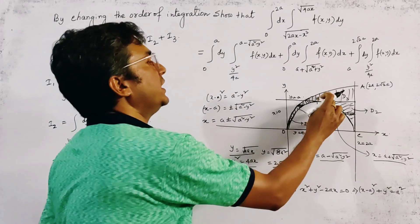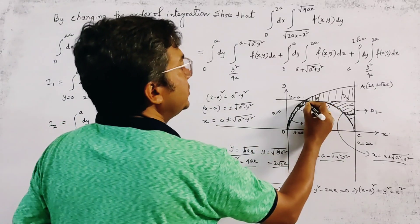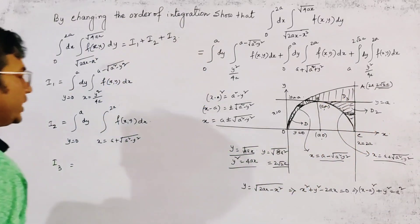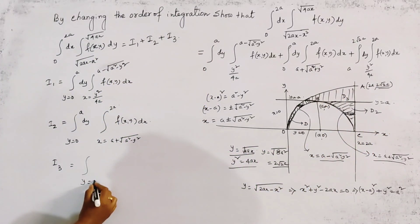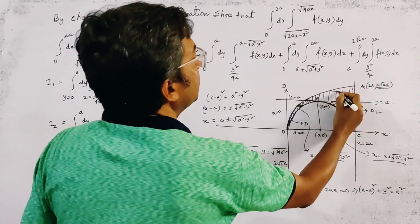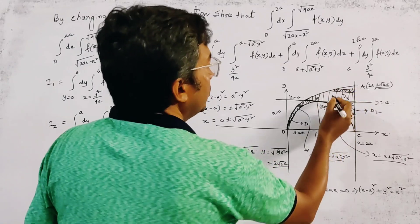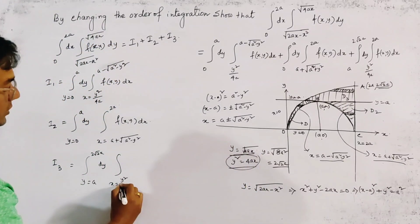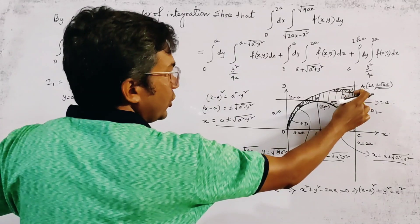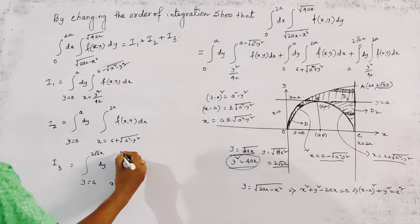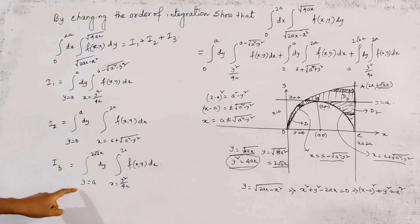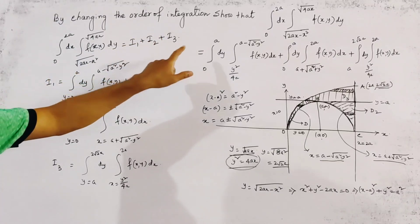For i3, the integration over region d3: the range of y is from a to 2√(2a). Drawing a strip along the x-axis, the lower range of x is on the parabola, so x = y²/4a, and the upper range is x = 2a. Writing these three integrations i1, i2, and i3 together gives our final answer.